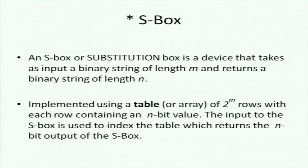An S-box or substitution box is a device that takes as input a binary string of length M and returns a binary string of length N — M does not have to equal N. It's typically implemented in software using a table of 2^M rows, with each row containing an N-bit value, because there are 2^M possible input values of size M bits, and each output row is N bits wide. If there's any question about this, just ask.